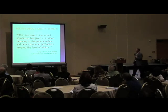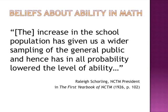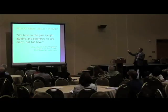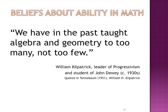The president of NCTM wrote in the first yearbook: 'The increase in school population has given us a wider sampling, hence lowered the level of ability in our schools.' And Kilpatrick, who was a leader of progressivism, said: 'We have in the past taught algebra and geometry to too many, not to too few.' This was in the 1930s.